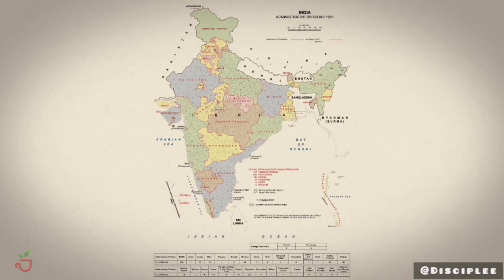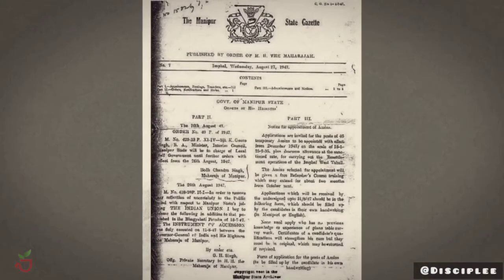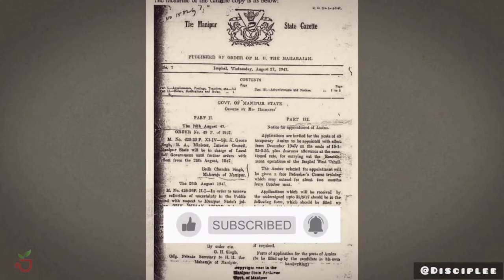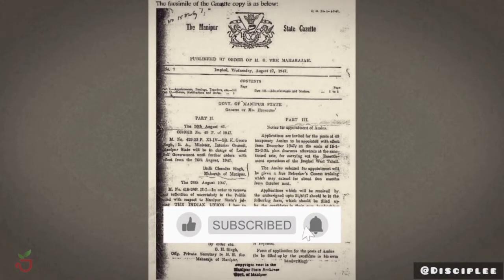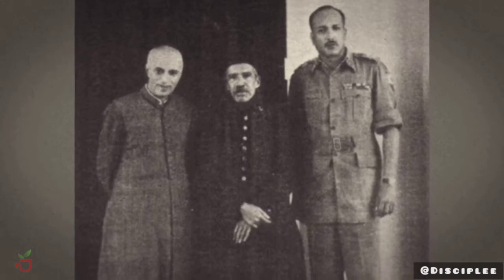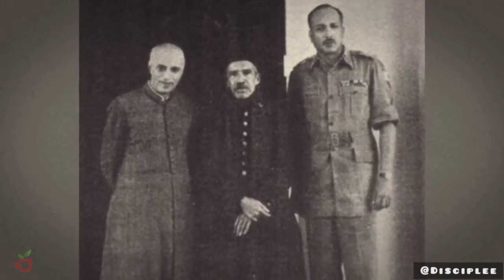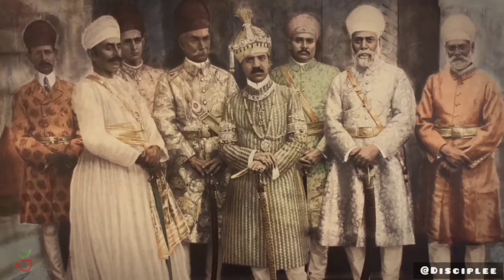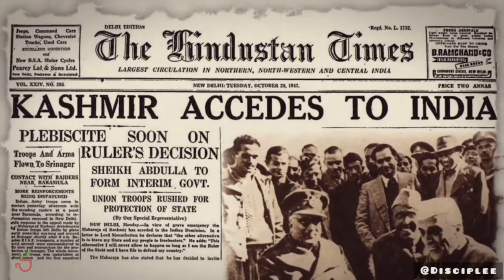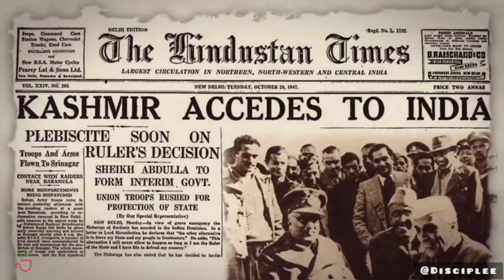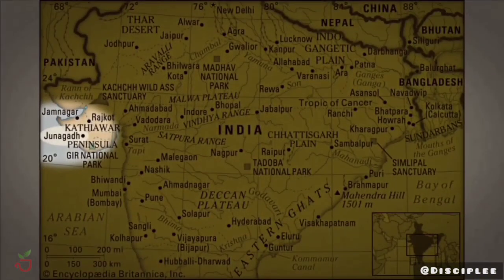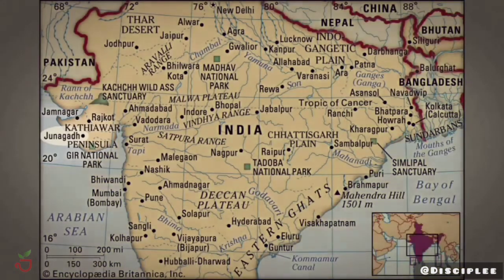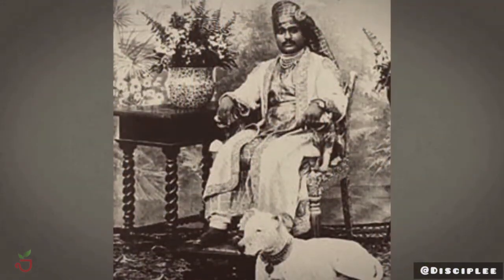Just before independence, the British announced that with the end of their rule over India, the system of paramountcy of the British Crown over the princely states would also lapse. This meant that all these states — as many as 565 in all — would become legally independent. The British government took the view that all these states were free to join either India or Pakistan, or remain independent if they wished. The British government was not going to pursue them for any particular course.